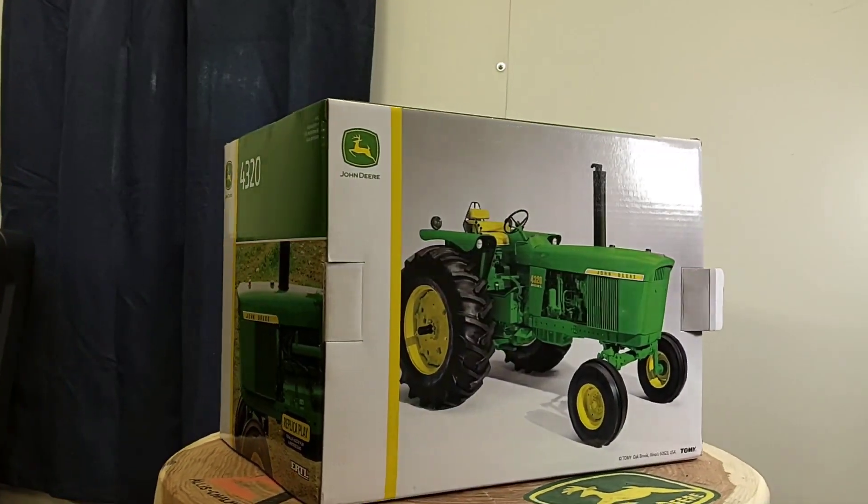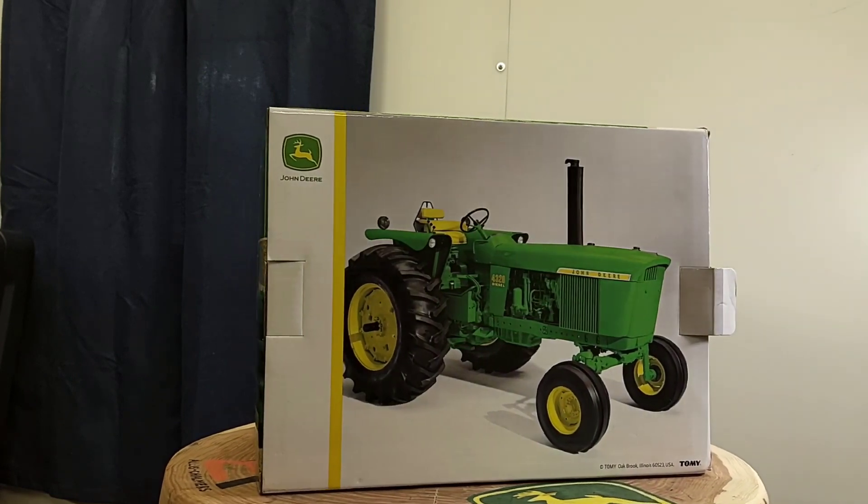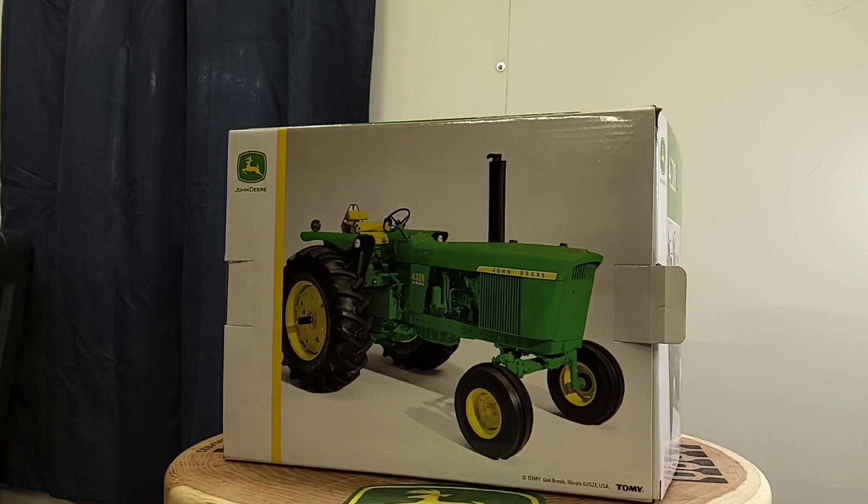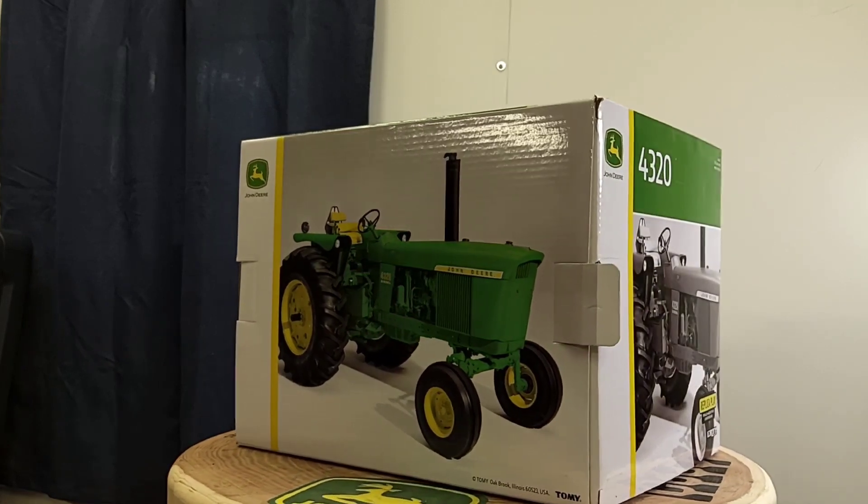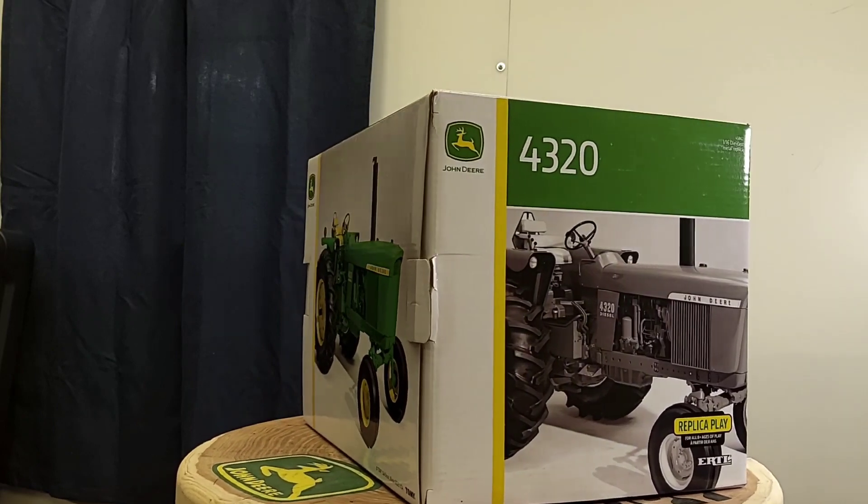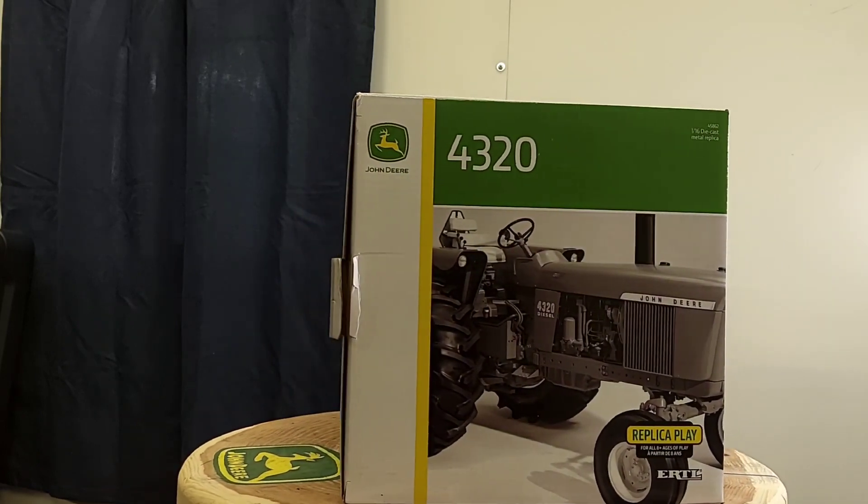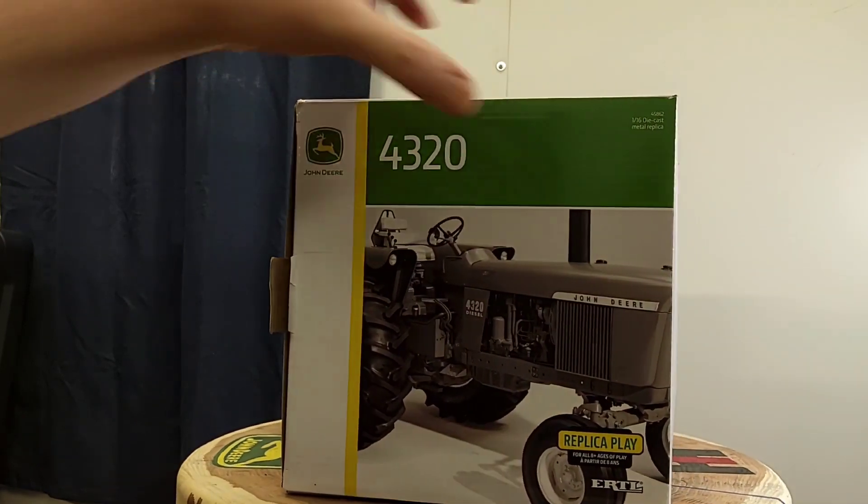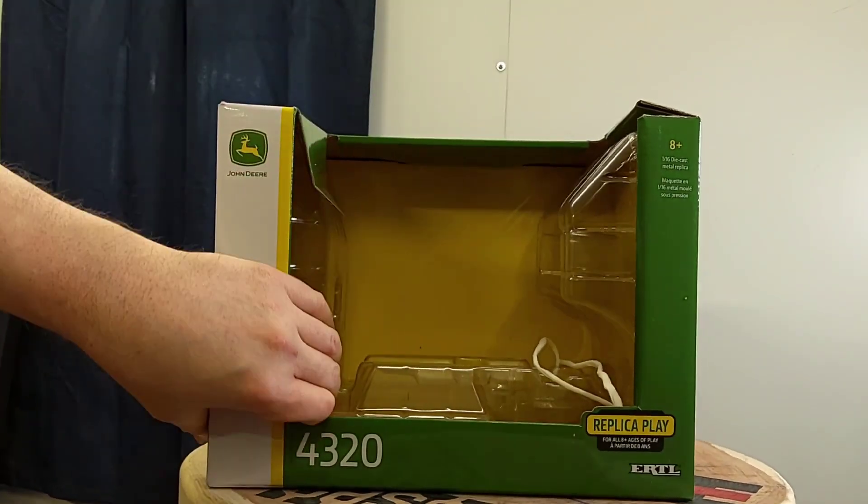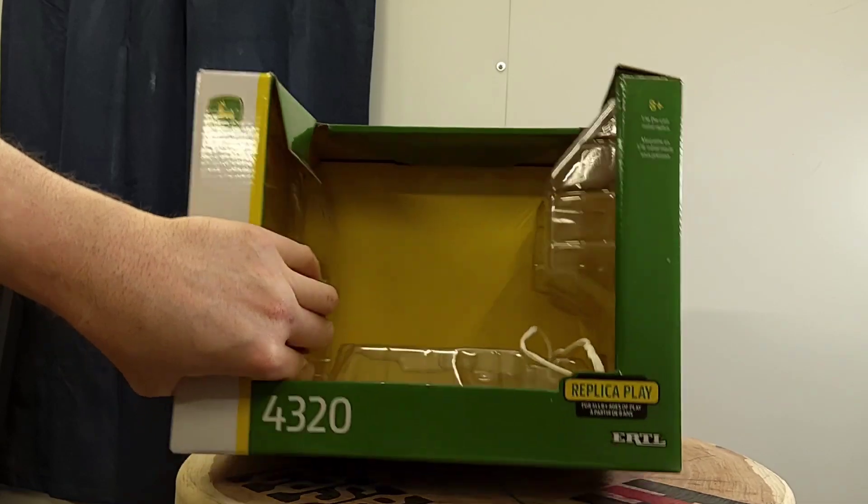How do you do folks, happy Friday, this is Phil for Replicas of the Past. Wanted to do a video on this guy recently released within the last probably month I'd say. It's a John Deere 4320 steel wheels on the back, part of the replica play line. This is the box of course, plastic shell in here, the tractor is tied down.